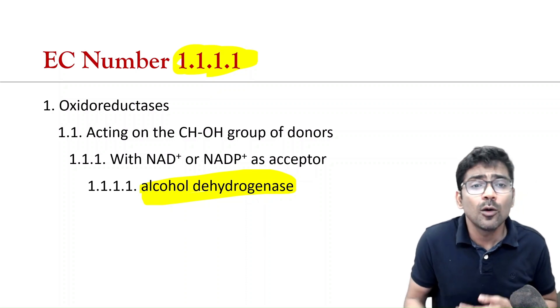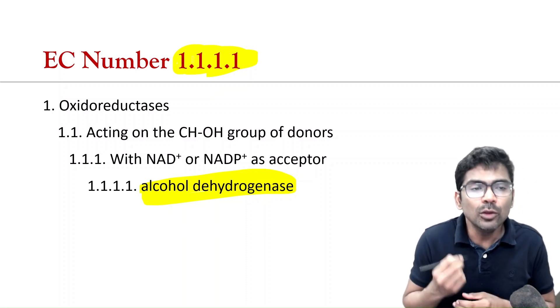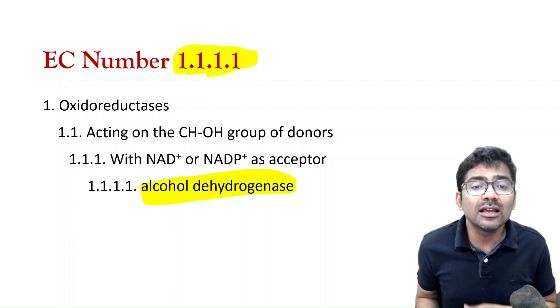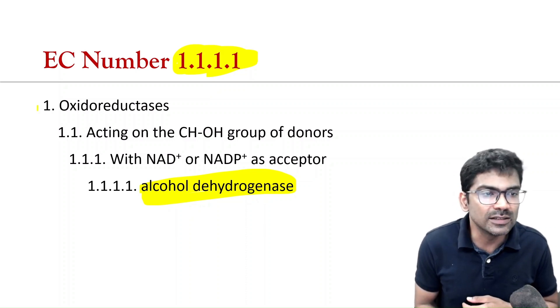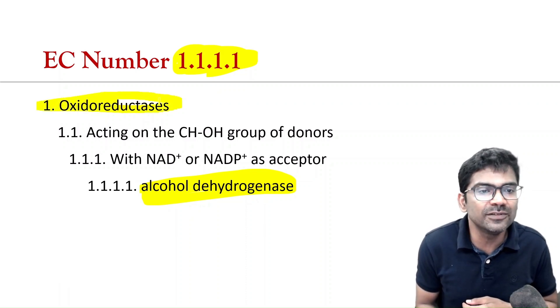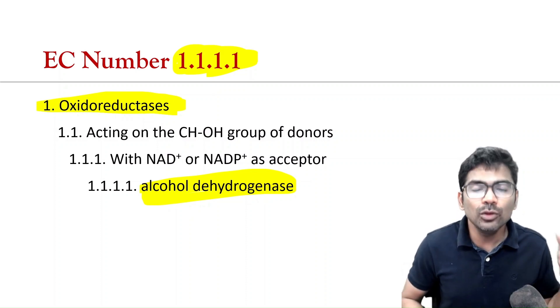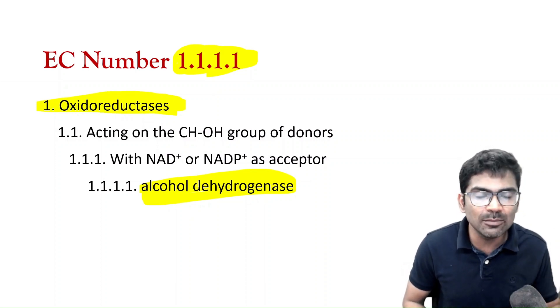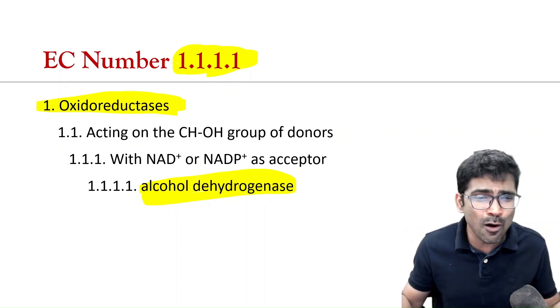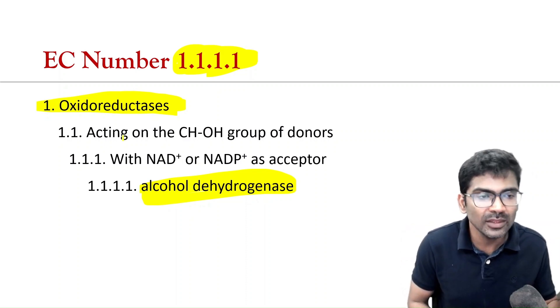Then, what should you memorize? You have to memorize the classes. Look at this. What is this first digit? First digit belongs to enzyme class. So, you have to know how many enzyme classes are there. That is all.